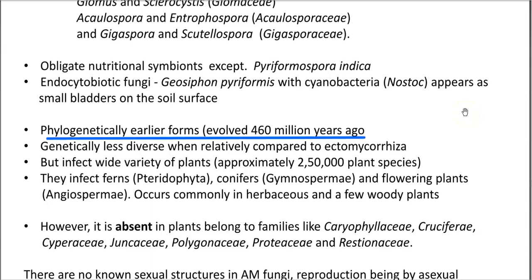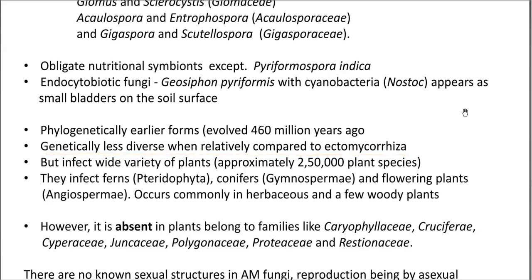Endomycorrhizae are phylogenetically older forms, having evolved approximately 460 million years ago. Compared to ectomycorrhizae, the genetic diversity of endomycorrhizae is very low — very few genera or species are found. However, despite this small genetic diversity, they can infect a wide variety of plants including pteridophytes, gymnosperms, and certain angiosperms.